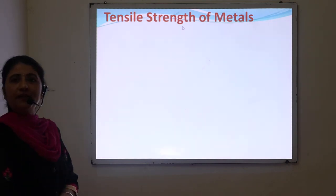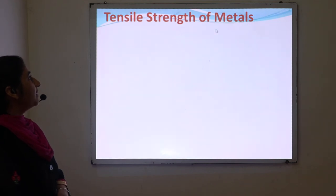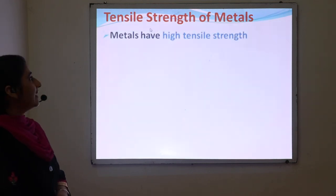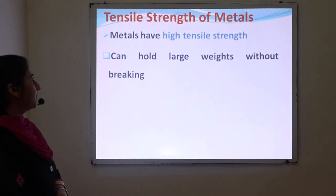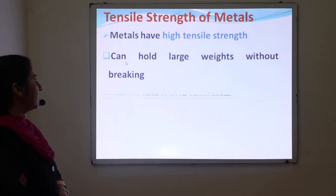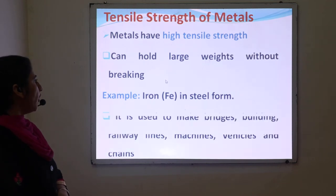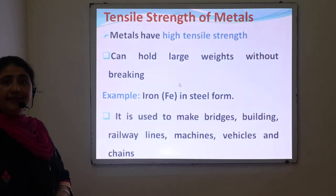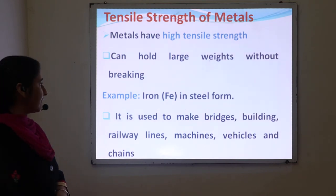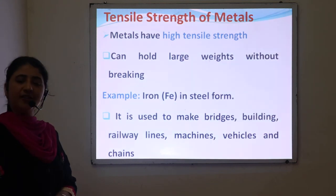The next physical property of metals is tensile strength. Metals have high tensile strength, meaning they can hold up large weights under stress. For example, iron in steel form has high tensile strength, and due to this it is used to make bridges, buildings, railway lines, machines, vehicles, and chains.